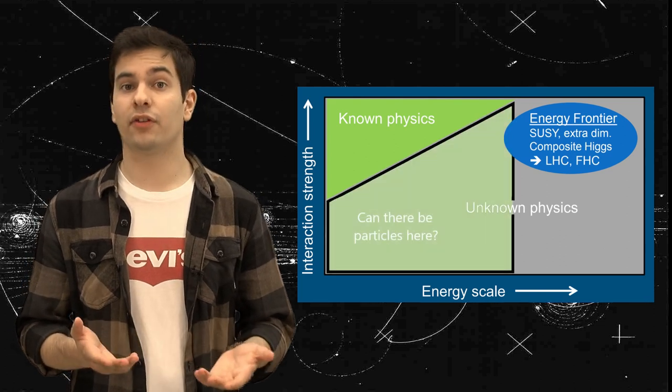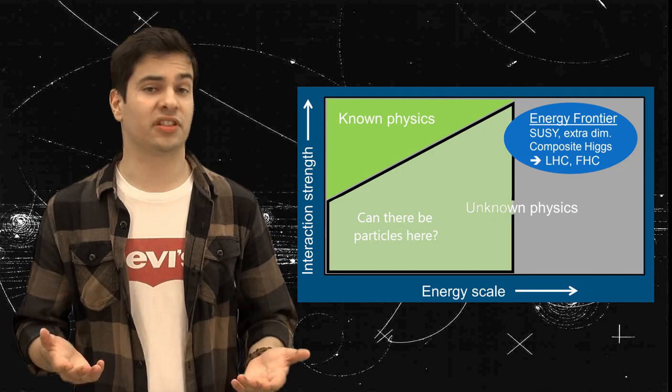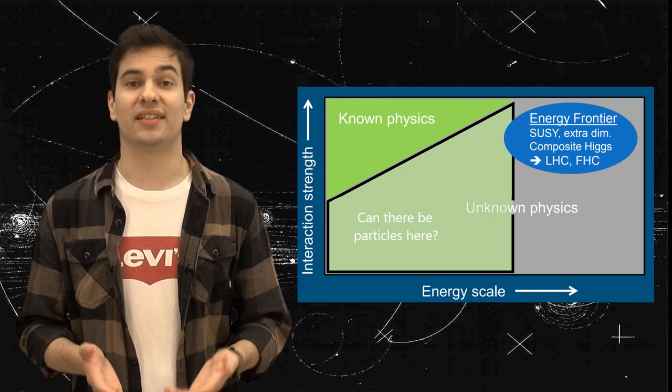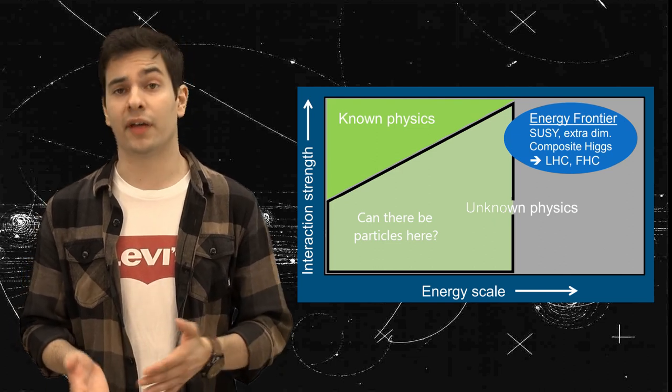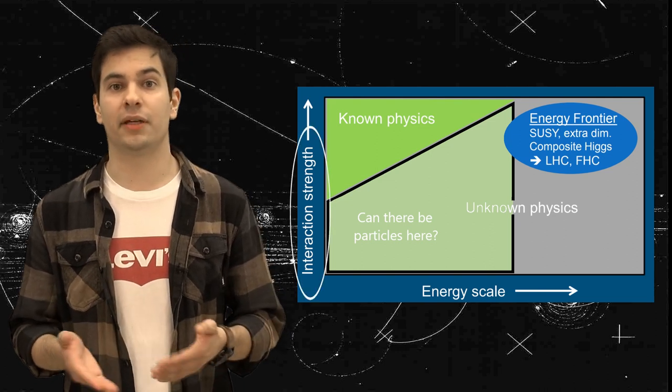In fact, we might have already surpassed the necessary energy in order to produce some of these particles, but were just not able to detect them. Although particle production is a stochastic process, it is not entirely random. We know that some particles interact more with others and as such they are more likely to be created.